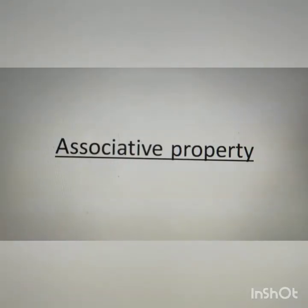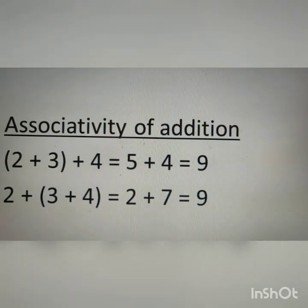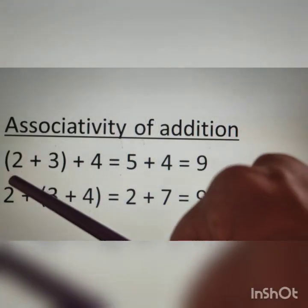Good morning students. Yesterday I explained two properties of whole numbers: closure property and commutative property. Today I will explain associative property and distributive property of whole numbers. Associative property — let us see examples of addition. Here 2 plus 3 plus 4, where 2 plus 3 is in brackets.